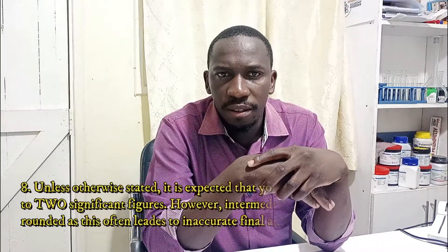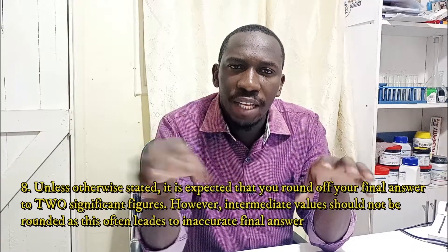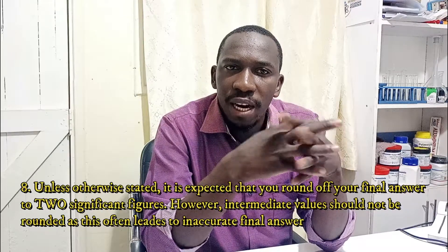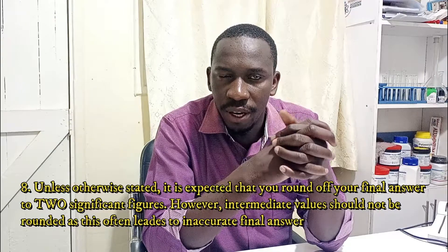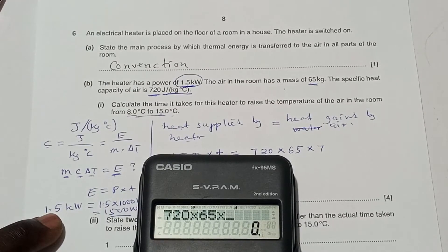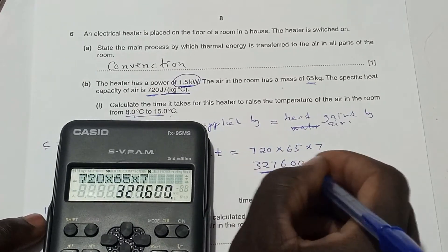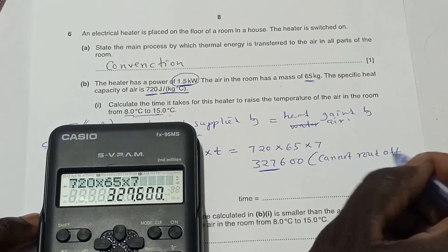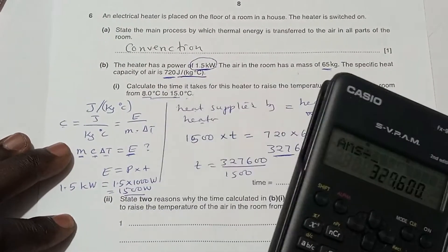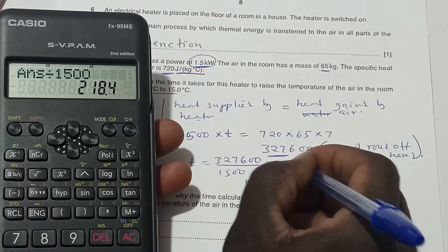In IGCSE physics, you are required to give your final answer in either two or three significant figures. Most of the time, you will give your answer in two significant figures unless stated otherwise. But then, because I've mentioned this, some students, they truncate or round off their calculations prematurely. If you look at this example where we are supposed to calculate the time taken, you can see the value of the energy that is gained by the air. We cannot round off the value of the energy until we get our final answer. So when we get our answer of t, that is when we can now round it off to the value that you see, that is 220 seconds. But we cannot round off prematurely during inside the calculations.